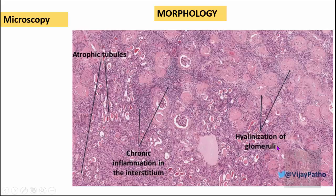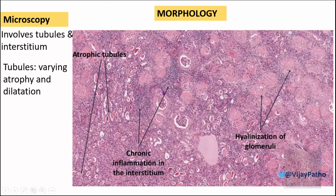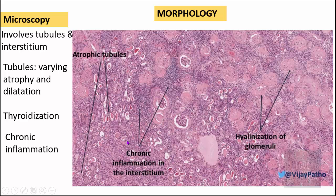Microscopically, chronic pyelonephritis is a disease of the tubules and interstitium, so you should look into the pathology of those structures. First, identify that you are dealing with renal parenchyma by locating the glomeruli. The tubules are of varying sizes, often showing atrophy — some dilated, some atrophied. A key characteristic feature is that these tubules are filled with eosinophilic material, resembling the structure of thyroid tissue, which is why this is referred to as thyroidization.